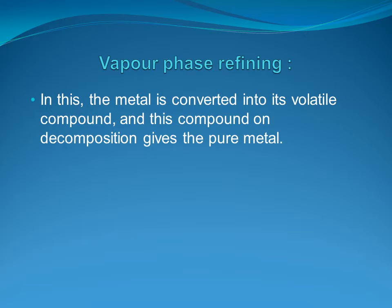The next process of refining is vapor phase refining. In this method, the metal is converted into a volatile compound and collected, then undergoes decomposition to give pure metal. The conditions for vapor phase refining are: (a) the metal should form a volatile compound with an available reagent, and (b) the volatile compound formed should be easily decomposable so that the metal is easily recovered.